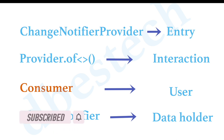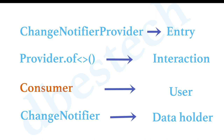First we have to understand ChangeNotifier. ChangeNotifier is a data holder class. We'll create a class that extends ChangeNotifier, and that class will hold our data — like a counter app, for example. So we create a class that extends ChangeNotifier, and it holds our data.